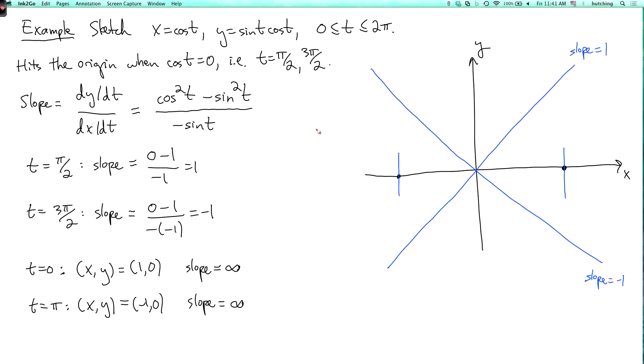So now, using those points, I can sketch the curve by just connecting the dots like this. Okay, so this is t equals 0. This is t equals pi. And here at the origin, this is where t equals pi over 2 and 3 pi over 2.